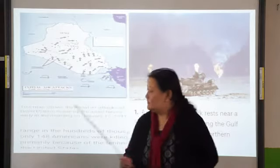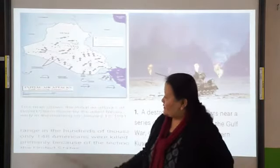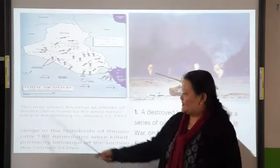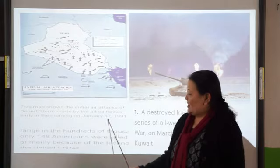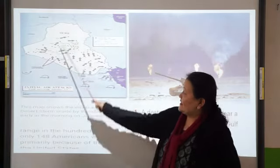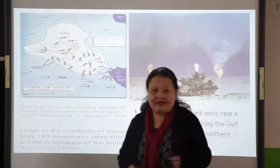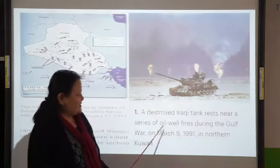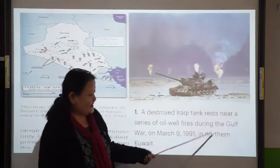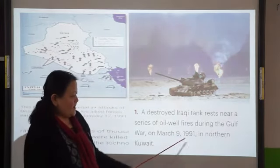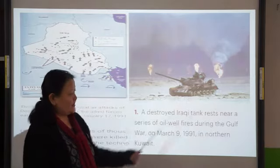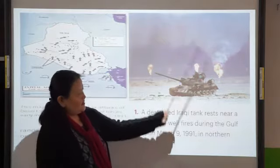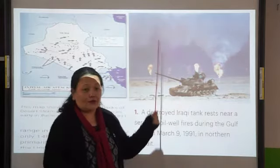A map shows the initial air attacks of Desert Storm made by the Allied forces early in the morning on January 17, 1991. A deserted Iraqi tank was seen near a series of oil well fires during the Gulf War on March 9, 1991. These Iraqi forces had occupied Kuwait, and this was what was left after the Kuwait war.